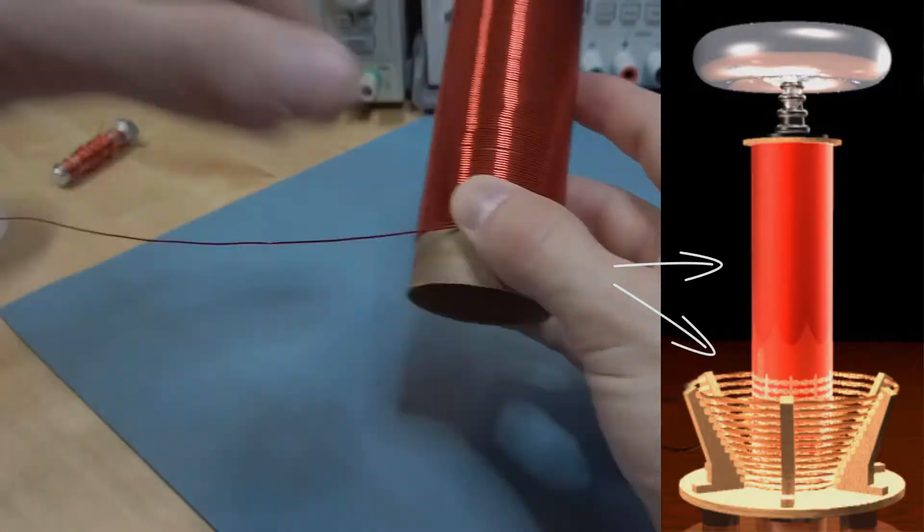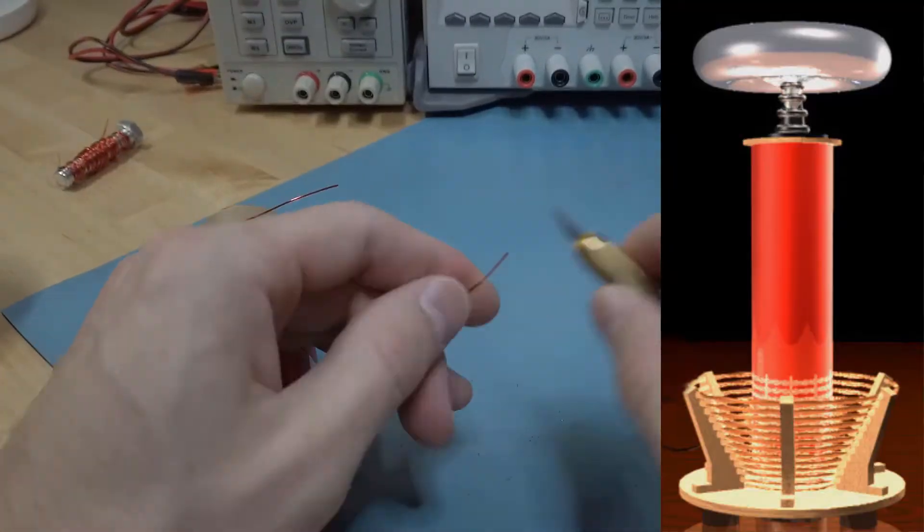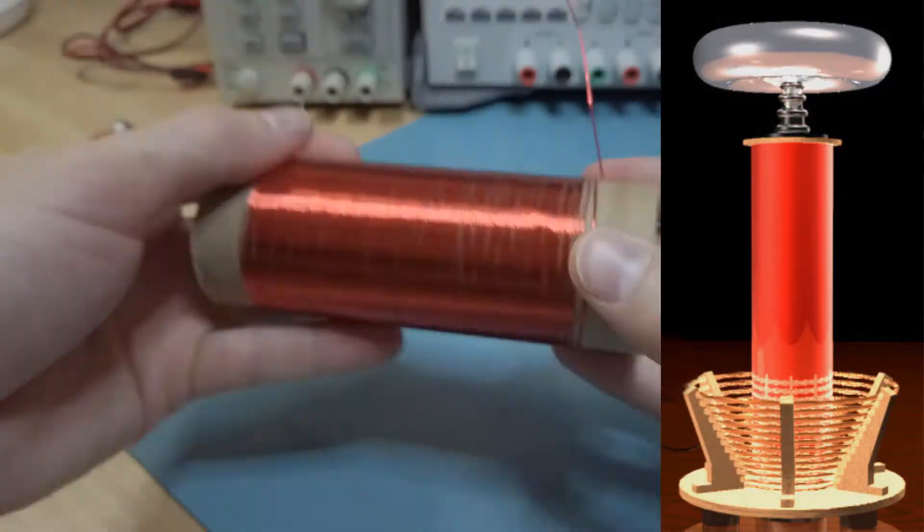The amount of voltage induced in the secondary coil is proportional to the turn ratio between the primary and secondary coil. Tesla coils will have a very low number of turns on the primary coil and a very large number of turns on the secondary coil in order to maximize the voltage across the secondary.